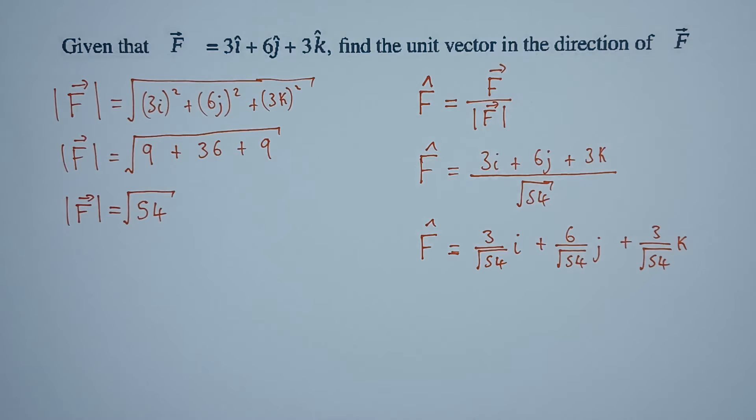This is the vector we're looking for, the vector in the direction of F. And it's a unit vector since we still have the i, the j, and the k. There you have it. Thank you very much.